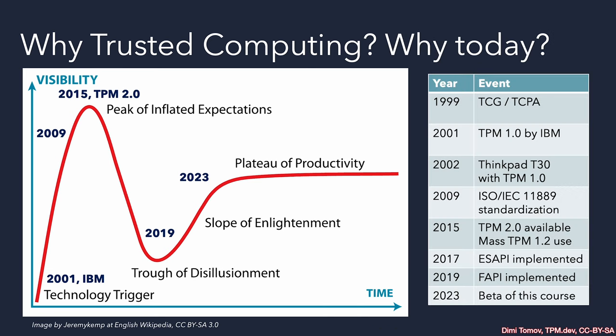The story of the TCG starts in 1999. Back then it was called by a different name — I think Compaq was also part of the consortium that started the TPM specification. It was only two years later when the first TPM version, an actual hardware chip, was manufactured by IBM, and at the time IBM was the sole manufacturer. So it's no surprise that in 2002 the first commercial off-the-shelf product anyone could buy was the ThinkPad T30, featuring the TPM 1.0.